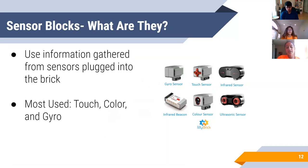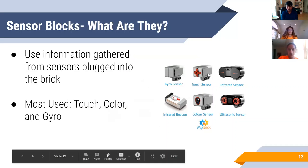The next big category we're going to jump into are sensor blocks. Sensor blocks use information gathered from sensors and send that information into the program to get a response. The three main sensors most used in EV3 that we'll be going over today are the touch sensor, the color sensor, and the gyro sensor.